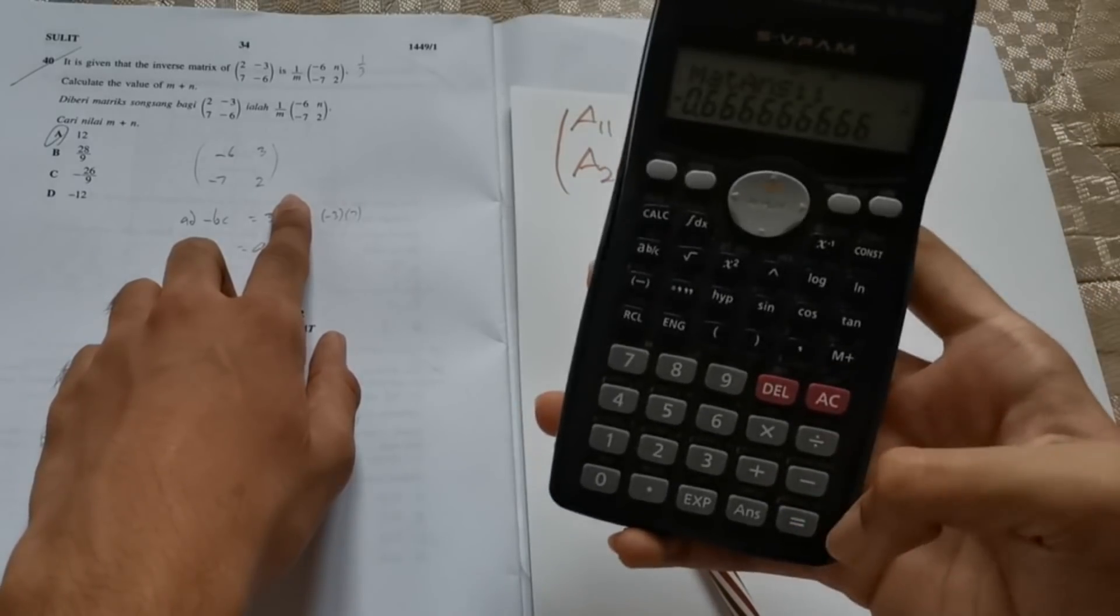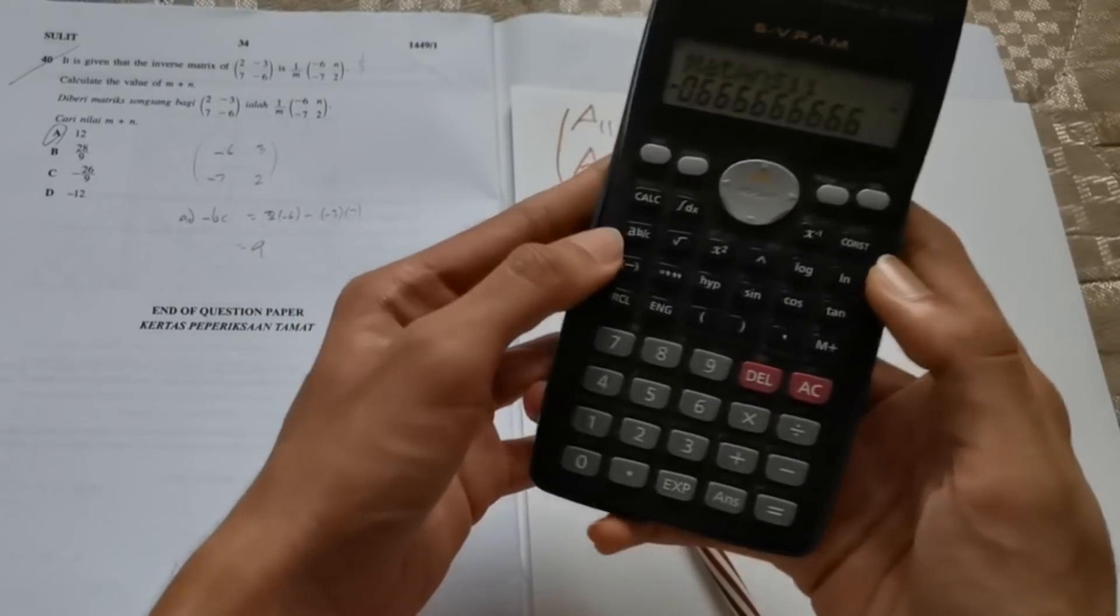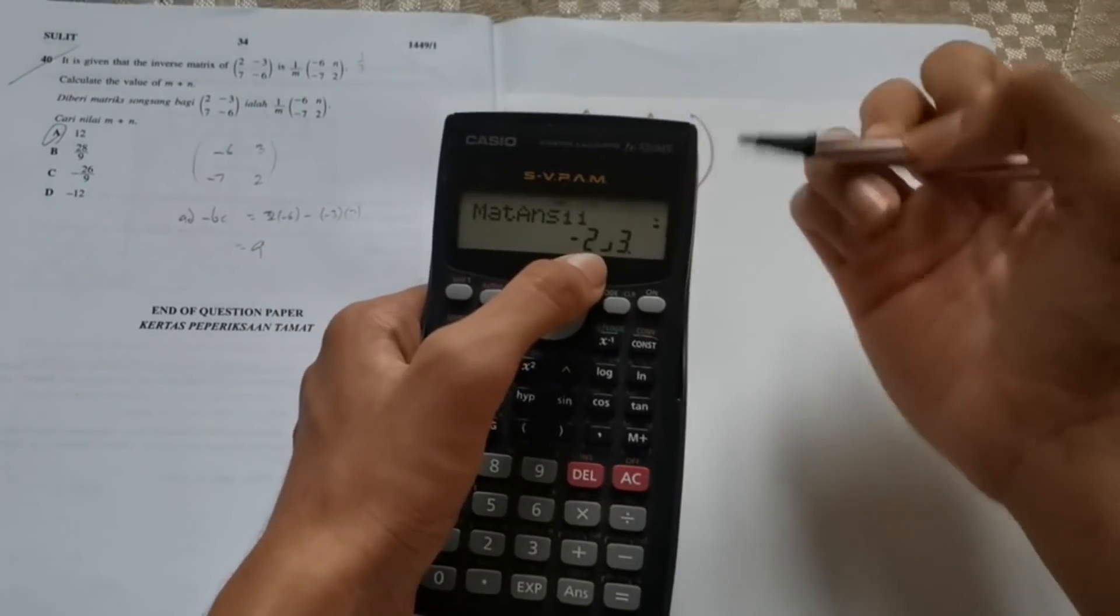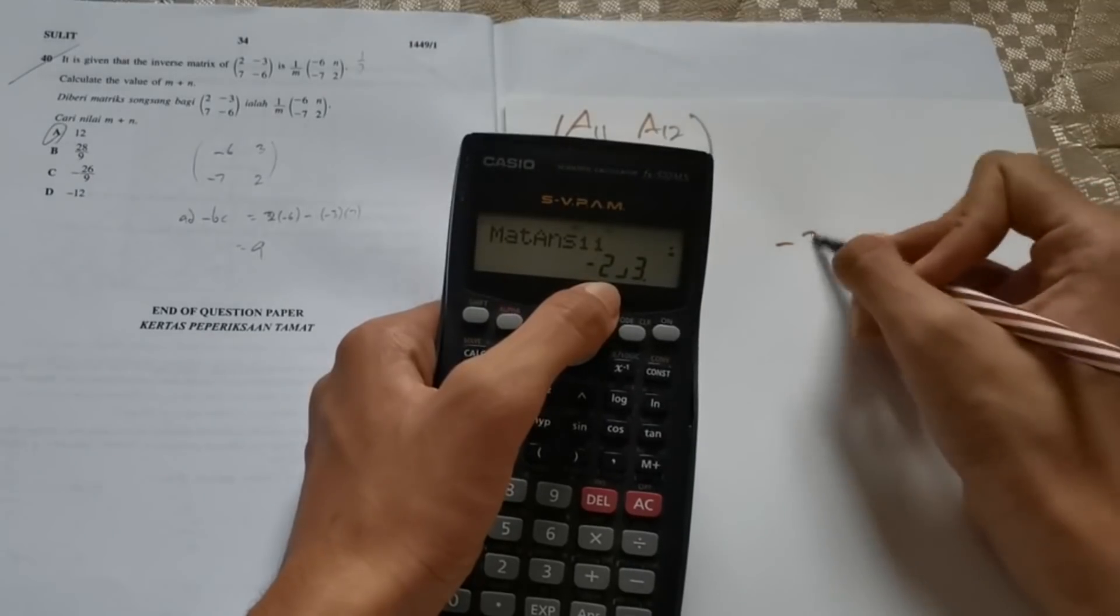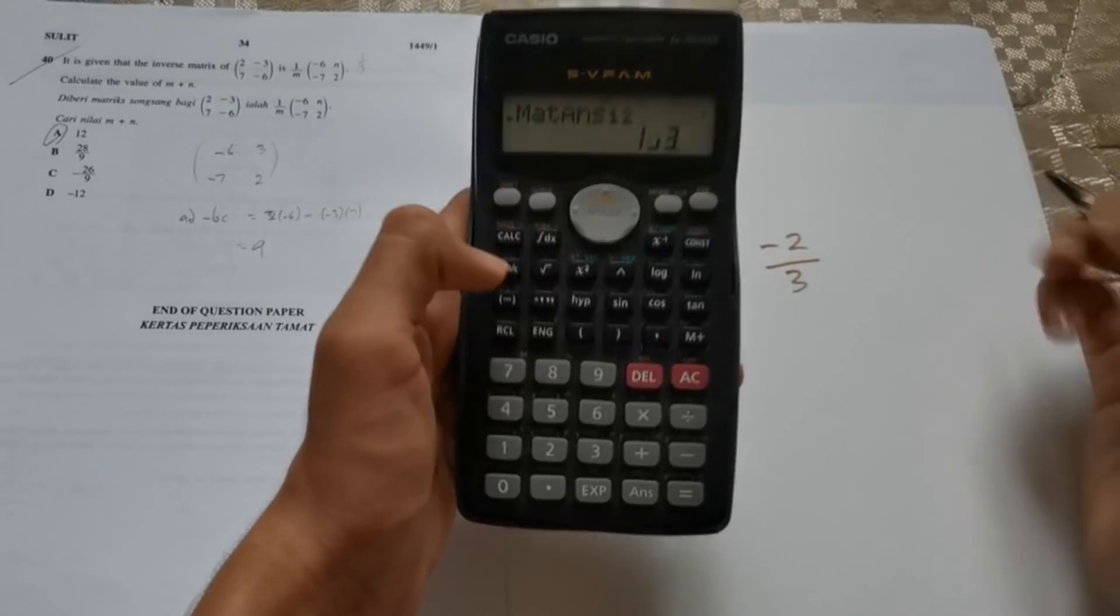In order to find the inverse, you need to press this x negative 1 button, which stands for to the power of negative 1. Do not use to the power of negative 1. You press equal and you'll get it in this decimal form. So you press shift and the fraction button, and you'll get negative 2 over 3. So you write this down. This is the inverse of the matrix.